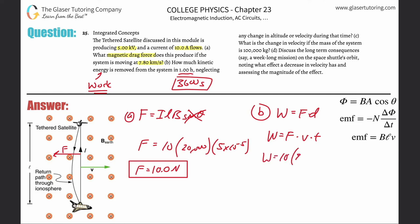So: force is 10 newtons, velocity is 7,800 meters per second, and time is 3,600 seconds. Calculating: 10 × 7,800 × 3,600. The result is 2.81×10⁸ — let me count the zeros: one, two, three, four, five, six, seven, eight — so that's 10 to the eighth power, in joules.